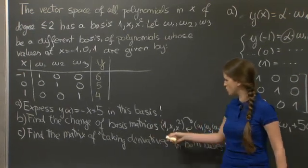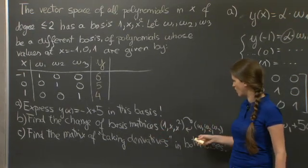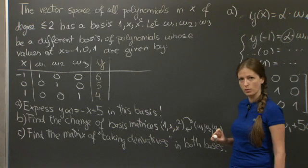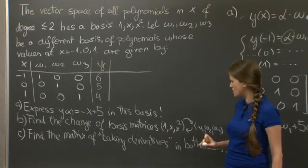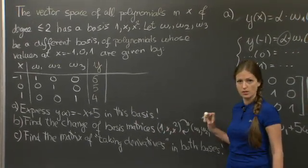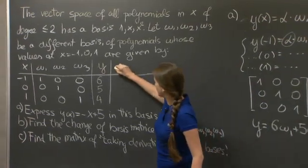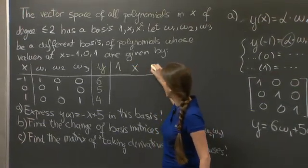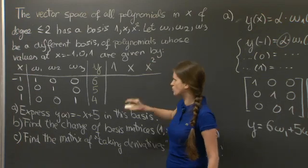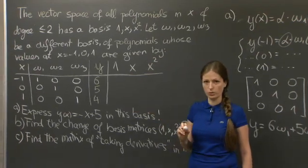And that's already a hint to solving the B part, which is find the change of basis matrices between 1, x, x squared, and w1, w2, w3. Change of basis matrices means expressing one basis in terms of another. So as a part of the problem, we will have to express 1, x, and x squared in terms of w1, w2, and w3.